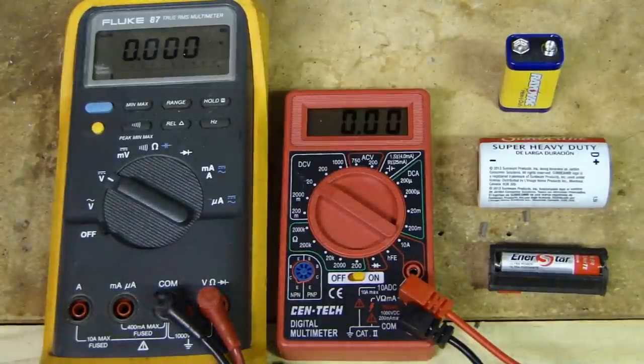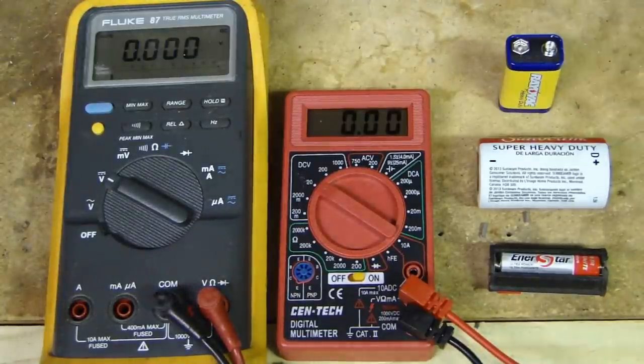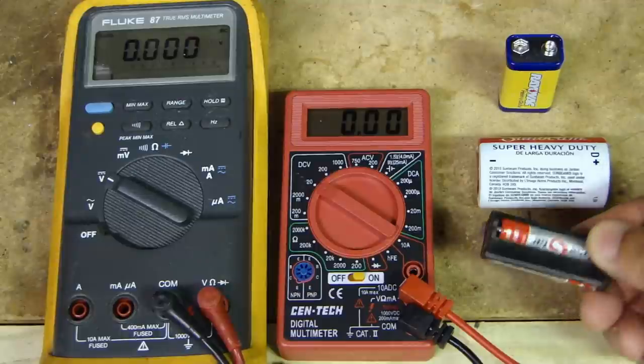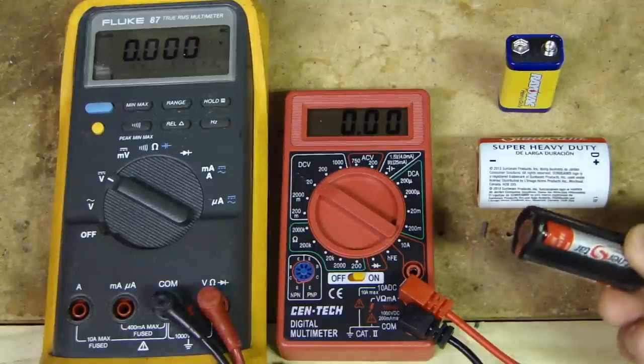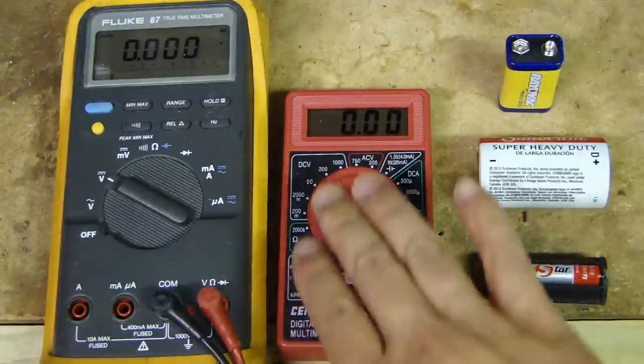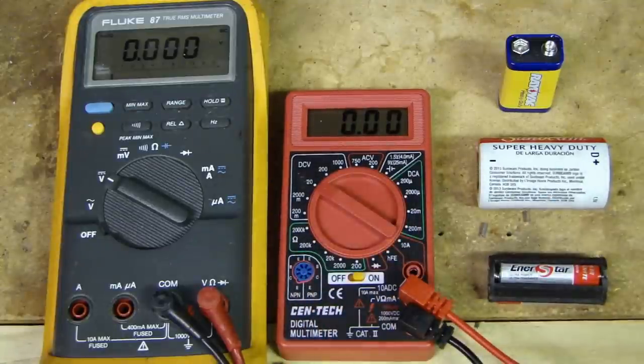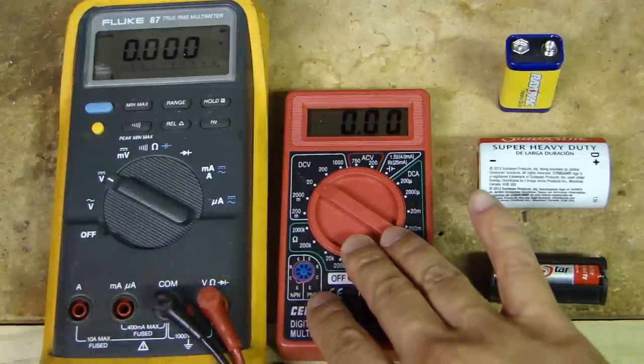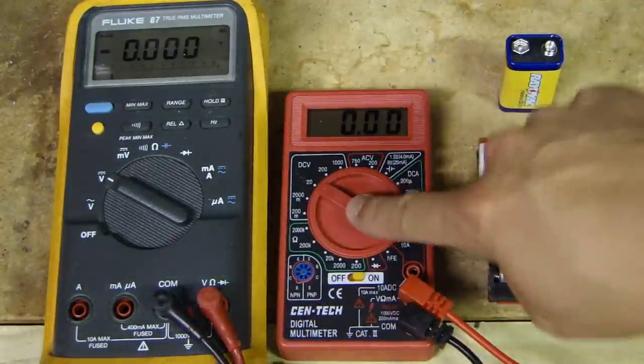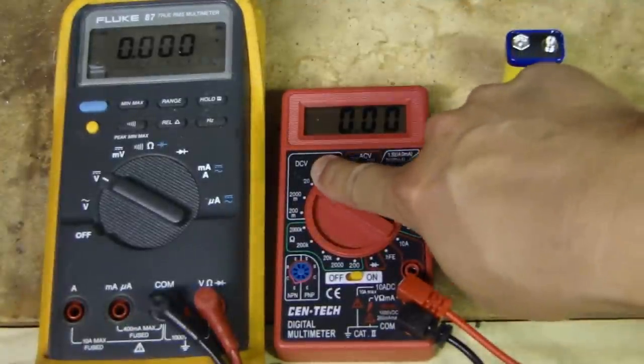The next test I will show you is testing some regular household batteries. I have a 9 volt, a D cell, a couple of AAA batteries, three of them in series. And I swapped out the other multimeter with this Harbor Freight, because throughout these videos, I want to give you an idea. The different brands will basically give you the same type of functions.